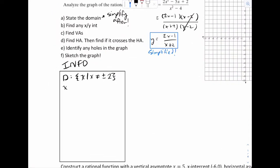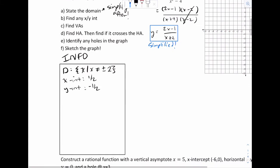So for x-intercept, I'm going to look at the simplified version. If I look at this, I can see that the top should be 1 half. And the y-intercept, that's going to be negative 1 half. My vertical asymptote, that's x equals negative 2. And my horizontal asymptote is y equals 2.